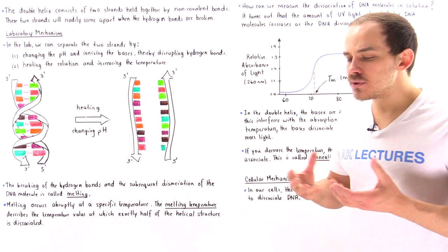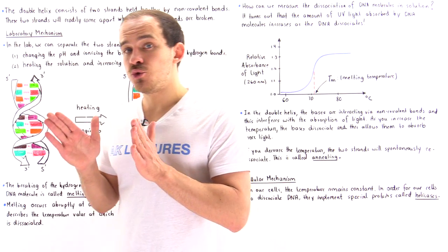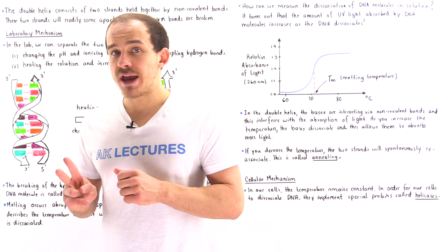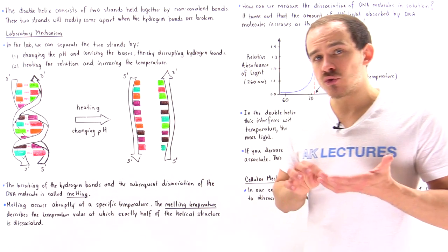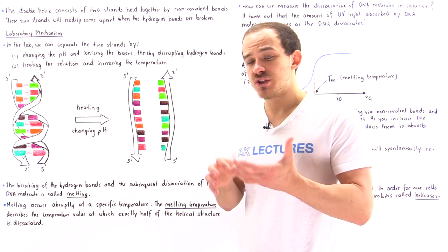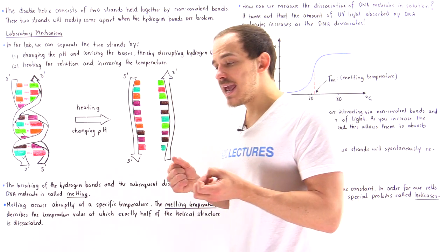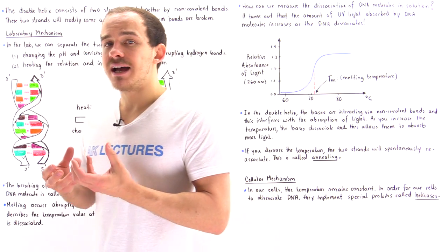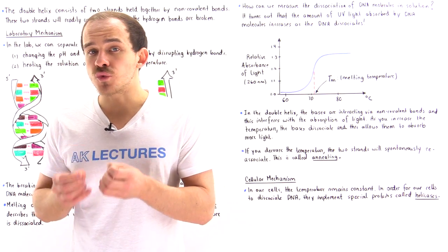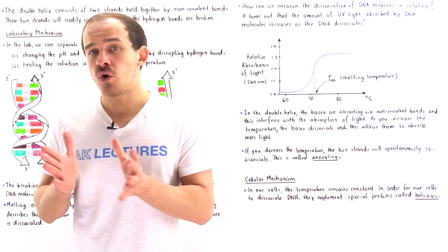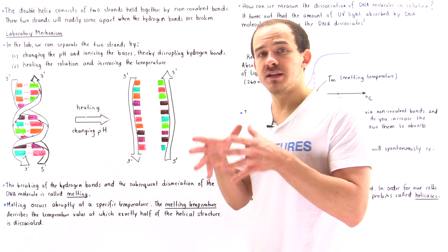In a laboratory setting, we can cause the dissociation of these two strands by one of two ways. We can either increase or decrease the pH of our solution that contains the DNA molecule. By changing our pH, we essentially ionize the bases, and by ionizing the bases, we break the hydrogen bonds holding our nucleic acids in that double helix structure.